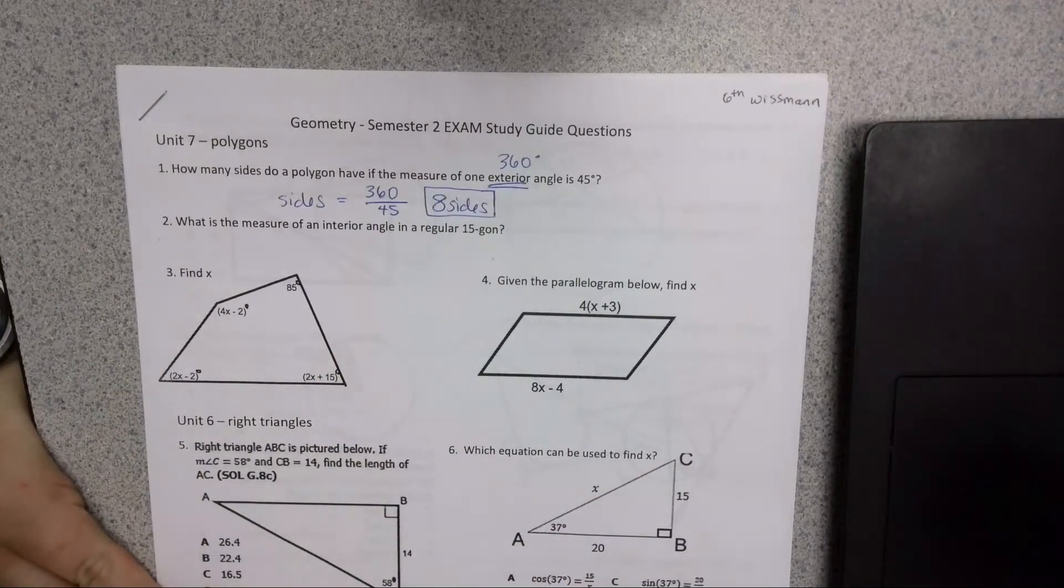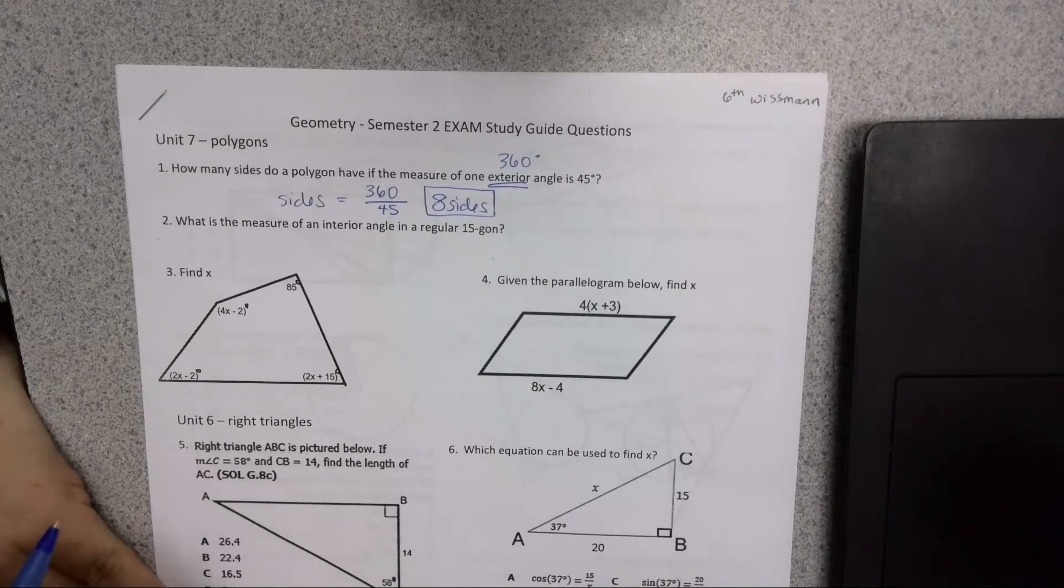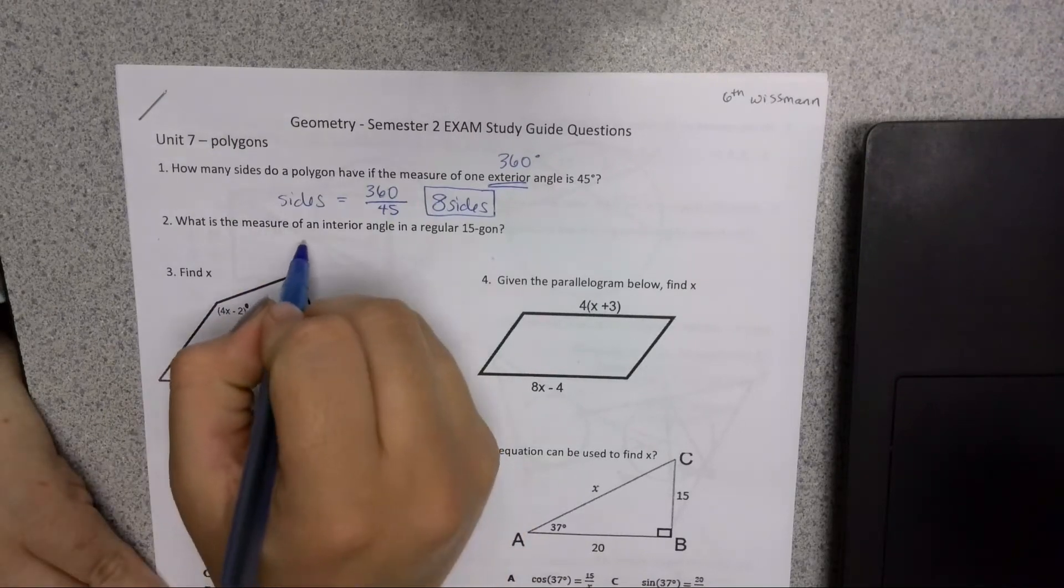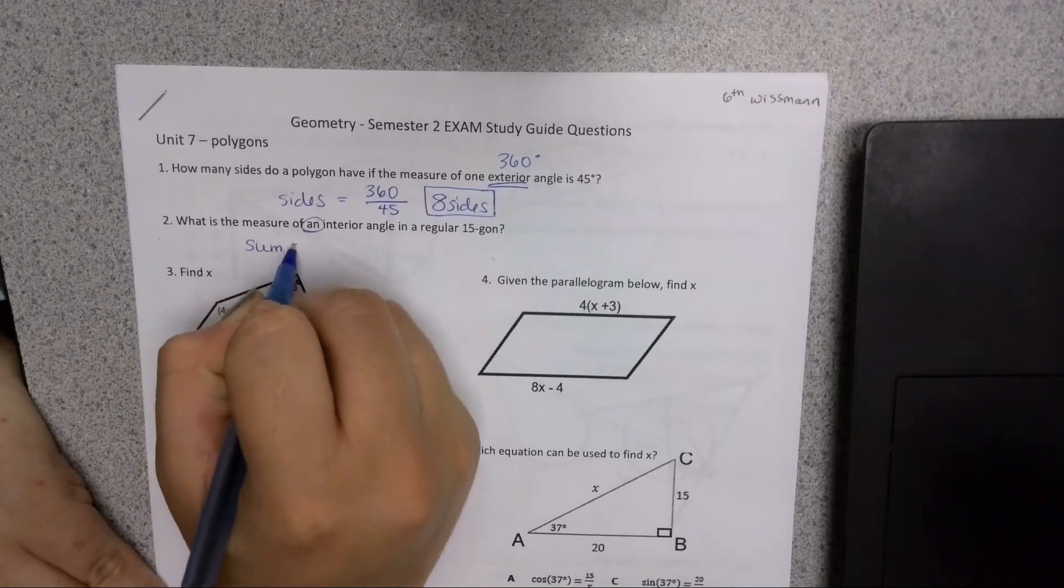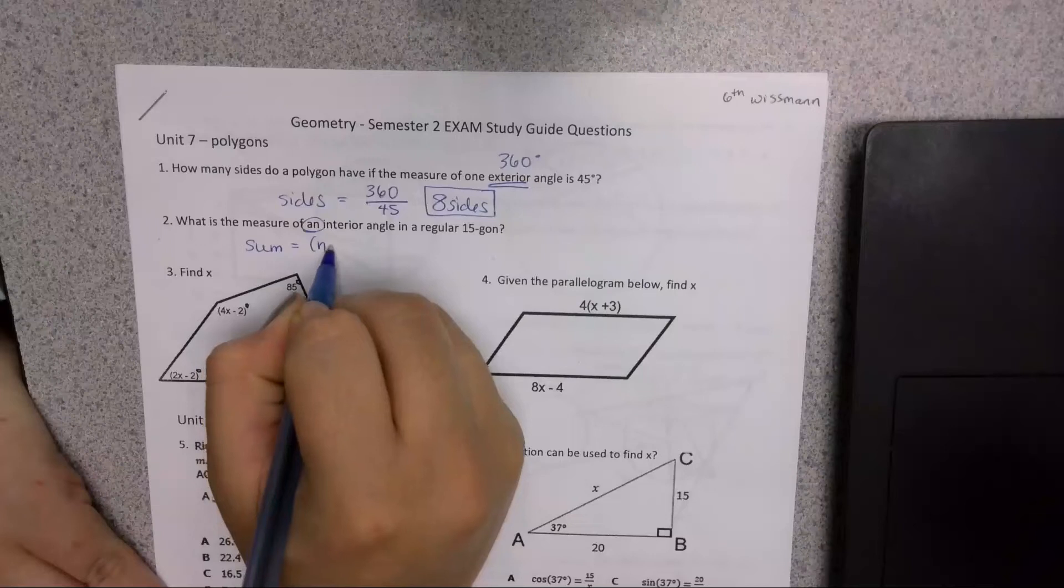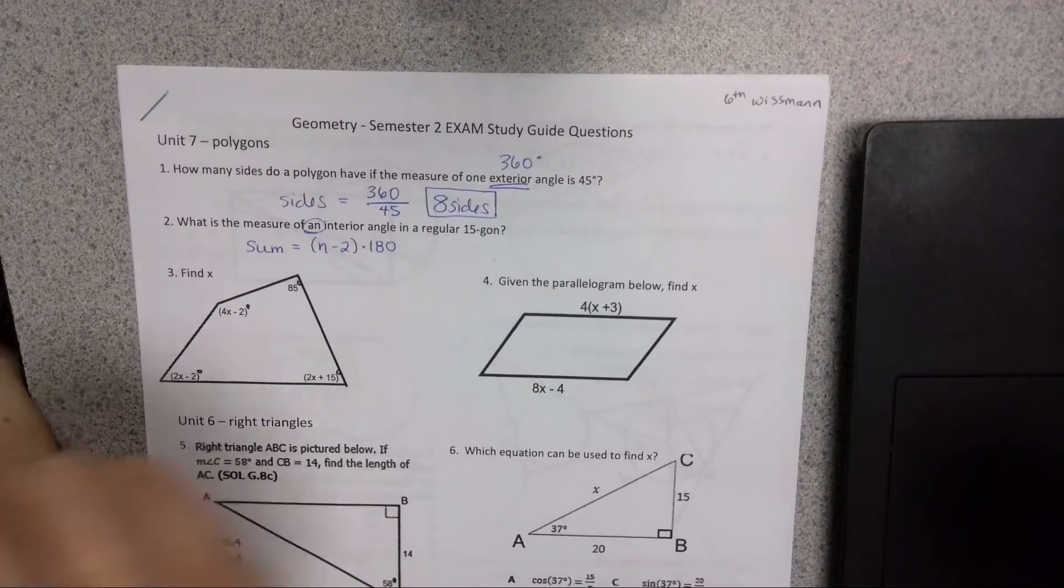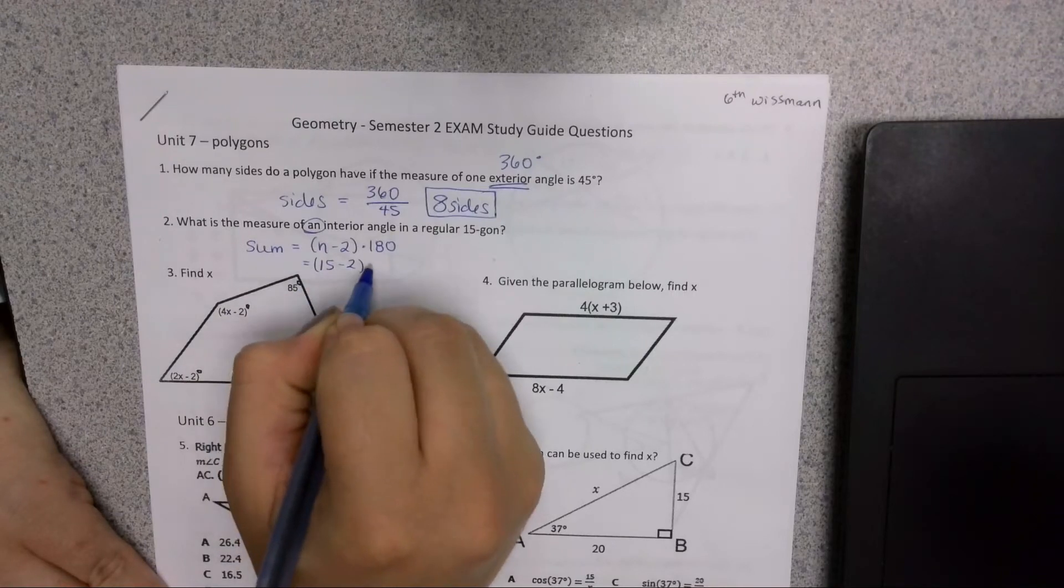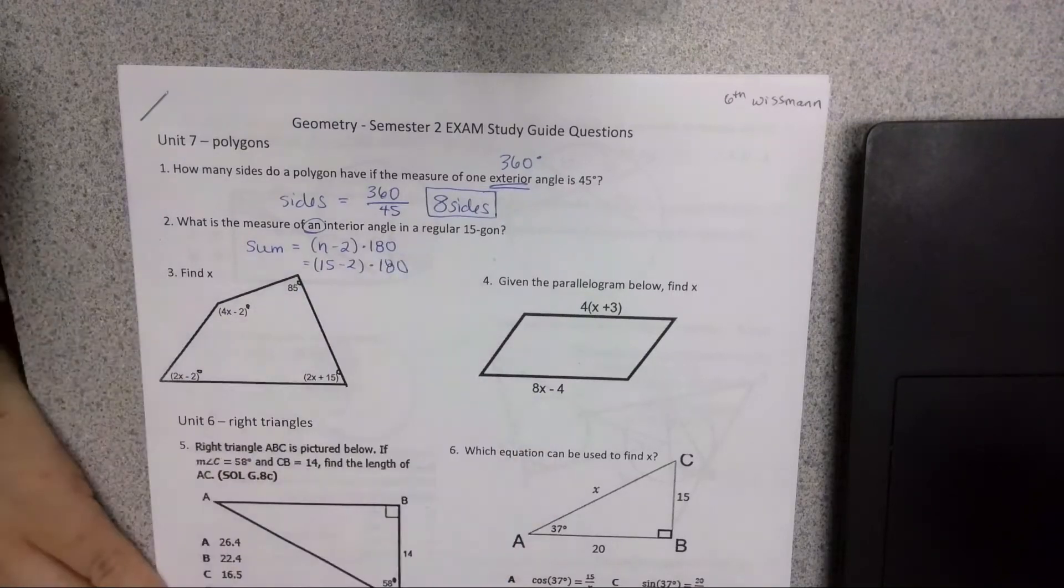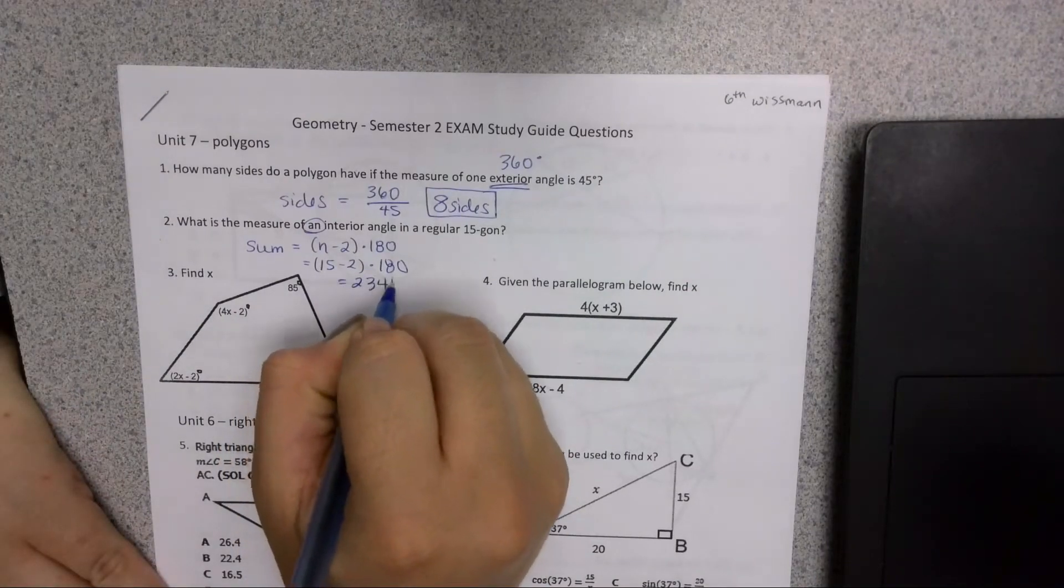Measure of each interior angle for a 15-gon. So we don't want the total, we want just 1. To find the sum of all of my interior angles, I'm going to use my formula n minus 2 times 180, and so my sum is going to be 15 minus 2 times 180 for 2,340.